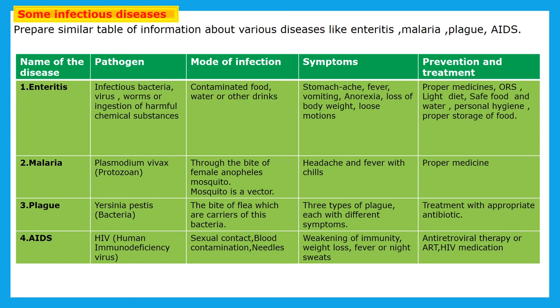Next is plague. Plague is caused through bacteria — Yersinia pestis. Mode of infection is through the bite of a flea which carries this bacteria — if that flea is a carrier of this bacteria, there are chances to spread this disease from person to person. There are three types of plague each with different symptoms. Treatment is with appropriate antibiotics prescribed by the doctor.